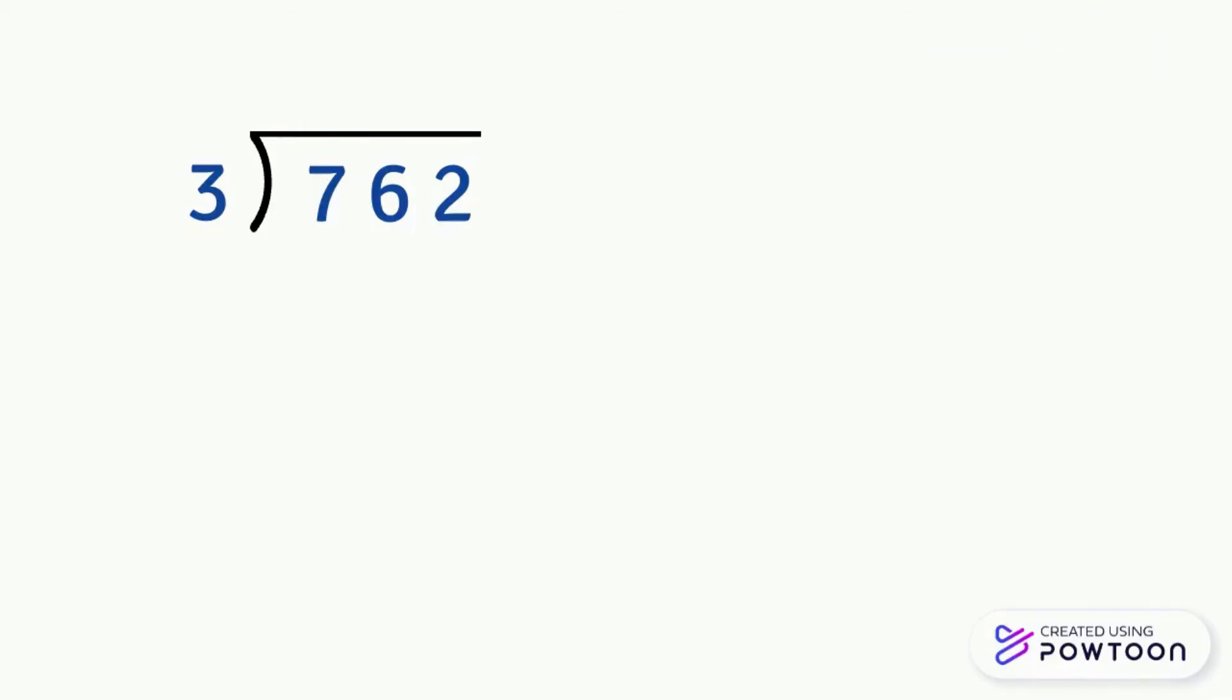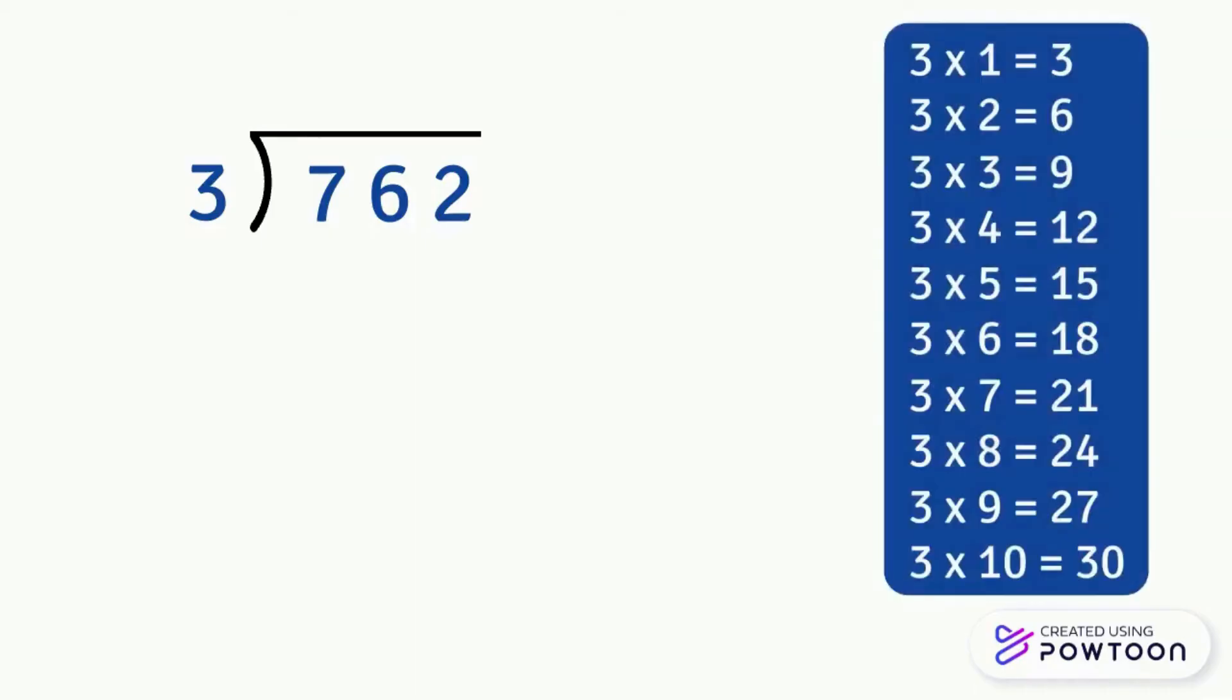If we find it difficult to find the answer, we can help ourselves with the table of 3. Since 7 is not in the table of 3, then we must find a number very close to 7 and at the same time this number must not be greater than 7. Take a good look at the table of 3: 3 times 2 equals 6 and 3 times 3 equals 9, but 9 is greater than 7, so we must take 3 times 2 which is equal to 6. So we write 2 directly above the 7 here in the quotient and continue.